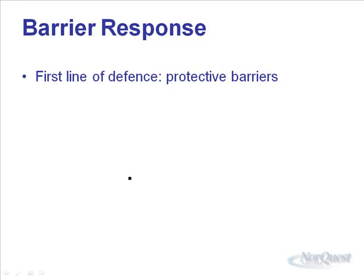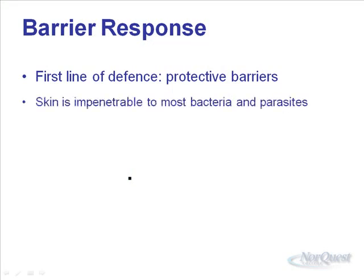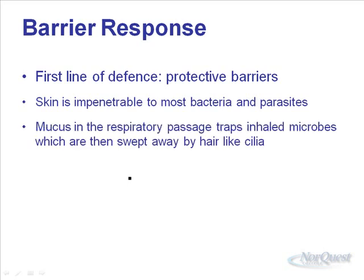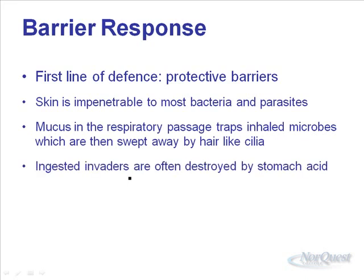The barrier response is the first line of defense. Our skin is pretty much impenetrable to bacteria and parasites. We also have mucus in our respiratory passage that helps trap inhaled microbes, and they're swept away by the hair-like cilia. We can cough them out or they get pushed up into our digestive system where they can be broken down by acid. Most ingested invaders are destroyed by stomach acid, so even if there's bacteria on food, much of it can be destroyed.